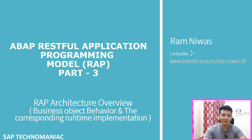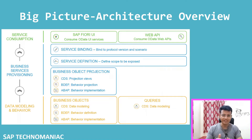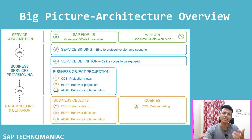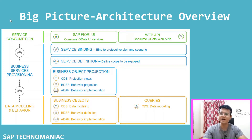Hello everyone, welcome to SAP Technomania. In this video, RAP Part 3, we will discuss the business object behavior and the corresponding runtime implementation. In my last video, we discussed the RAP architecture - when we build an OData service for a Fiori application or as a web API, we divide the task into three parts: data modeling and behavior, business service provisioning, and service consumption.